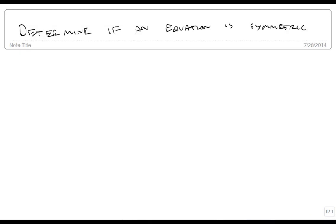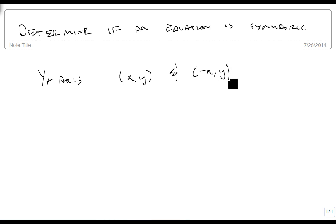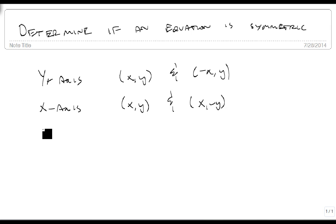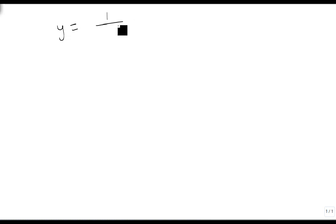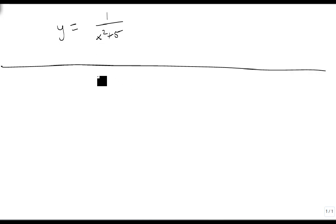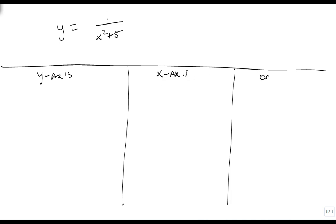We are now going to determine if an equation is symmetric or not. We use the definitions that the y-axis has points at (x, y) and (-x, y), the x-axis has points at (x, y) and (x, -y), and the origin has points at (x, y) and (-x, -y). We will take an equation and break it into three different tests: y-axis, x-axis, and origin.